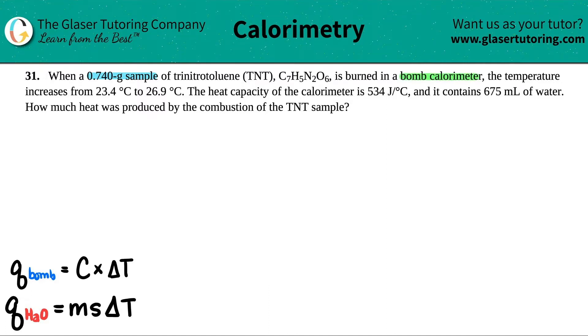the temperature increases from 23.4 degrees Celsius to 26.9 degrees Celsius. The heat capacity of the calorimeter is 534 joules per degree Celsius, and it contains 675 mils of water. How much heat was produced by the combustion of TNT sample?